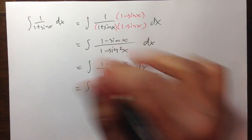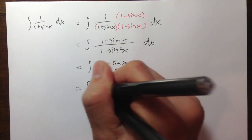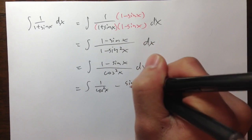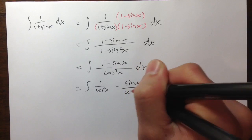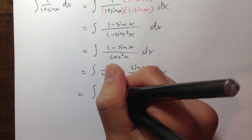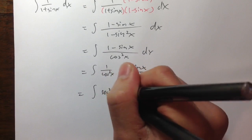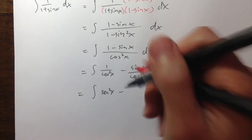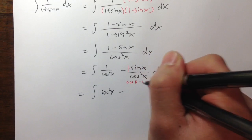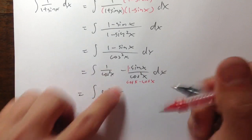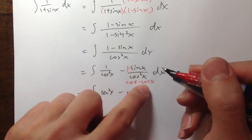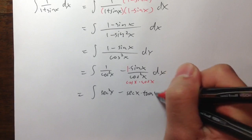What we can do with this is split the fraction. The first part is 1 over cosine squared x, and the second part is sin x over cosine squared x, all dx. Now, 1 over cosine squared x is secant squared x. For the second part, we can write it as 1 over cosine x times sin x over cosine x, which gives secant x times tangent x dx.